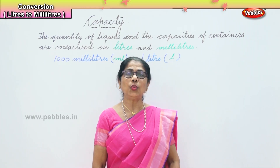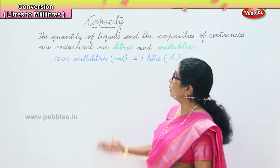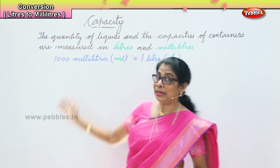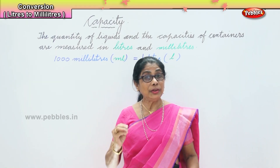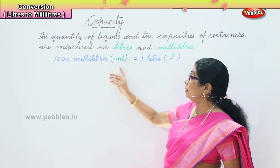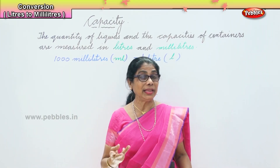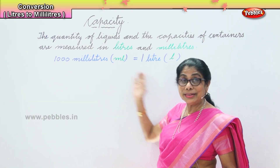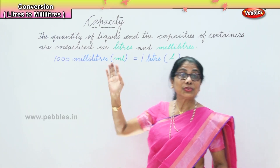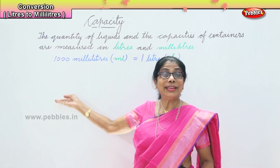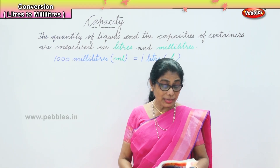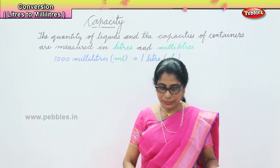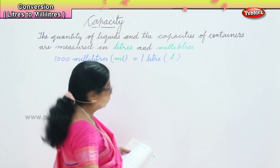Hi children, now we are going to convert liters into milliliters. When you are given one liter is 1000 milliliters — if it is three liters, three into one thousand will give you 3000 milliliters. So let's do a conversion: converting liters into milliliters.